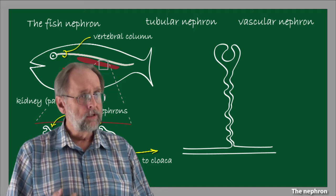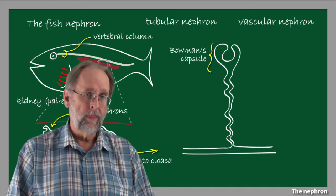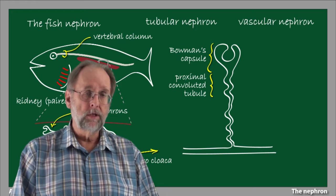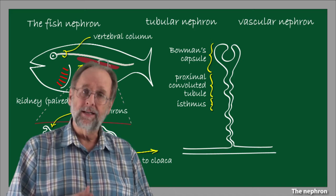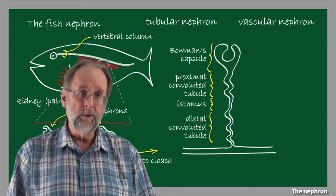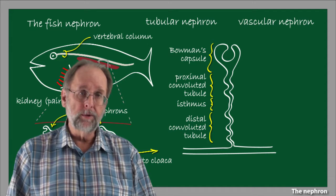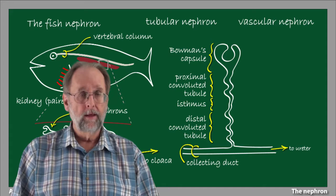The tubular nephron collects fluids from the body water. The initial collection point for this is a cup-shaped structure known as the Bowman's capsule. Liquid that gathers in the Bowman's capsule drains into the so-called proximal convoluted tubule, and then into a comparatively narrow tubule known as the isthmus. The isthmus then drains into another convoluted tubule, the distal convoluted tubule, and then ultimately into the collecting duct, which leads ultimately to the ureter, and then to outside the body.